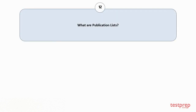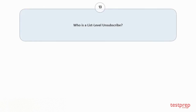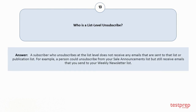Question number twelve: what are publication lists? A publication list helps you manage how subscribers receive several different categories of emails or SMS messages. Publication lists help you manage subscribers' unsubscribe or opt-out actions. Having a separate publication list for each communication type enables users to honor an opt-out request from one publication type without unsubscribing that person from all previously subscribed-to publications.